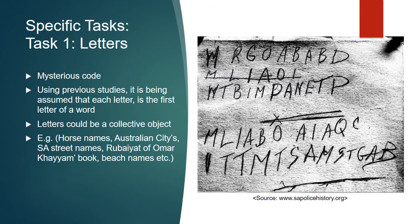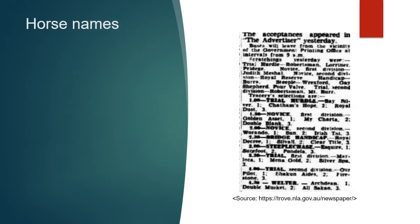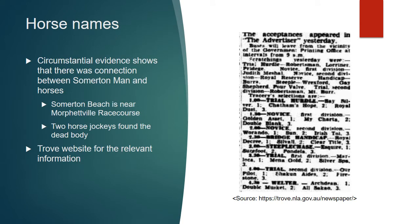The first task involves the mysterious code. Using previous studies, we assume that each letter of the code is the first letter of a word, and that the letters represent a collective object like horse names or Australian cities. We chose horse names because circumstantial evidence shows a connection between the Somerton Man and horses — Somerton Beach is near Morphettville Racecourse, a horse racing centre, and his body was found by two horse jockeys.